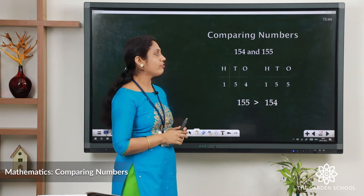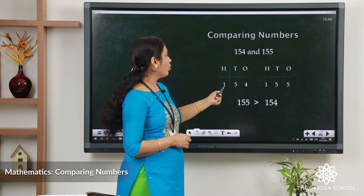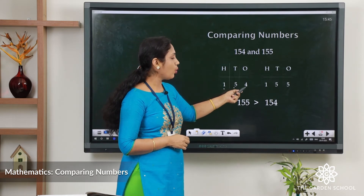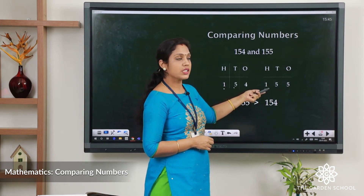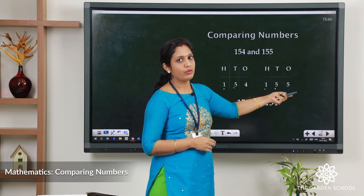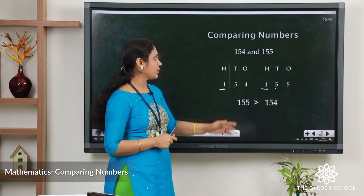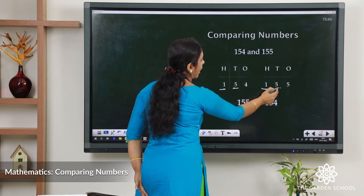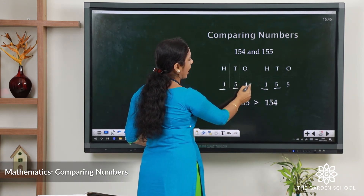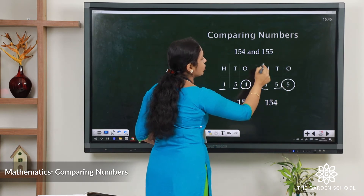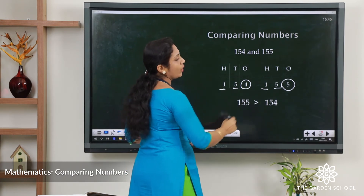Let's check another example: 154 and 155. In 154 we have 1 hundred, 5 tens and 4 ones. In 155 we have 1 hundred, 5 tens and 5 ones. In the hundreds position both have 1, so we move to the tens — both have 5, so we move to the ones. Here we have 4 and 5. Since 5 is greater than 4, we can say 155 is greater than 154.